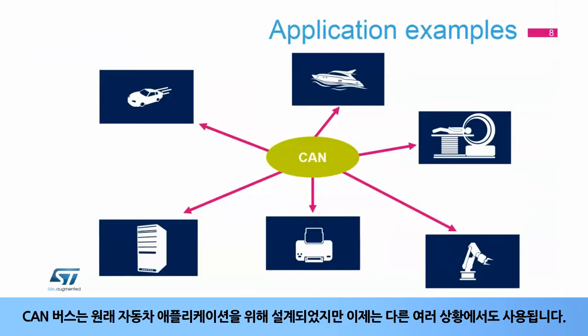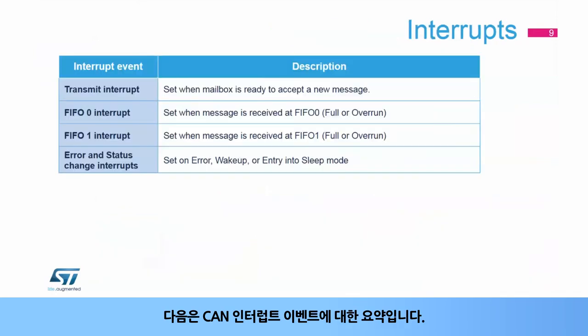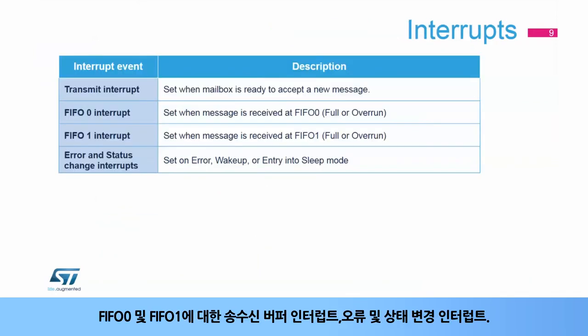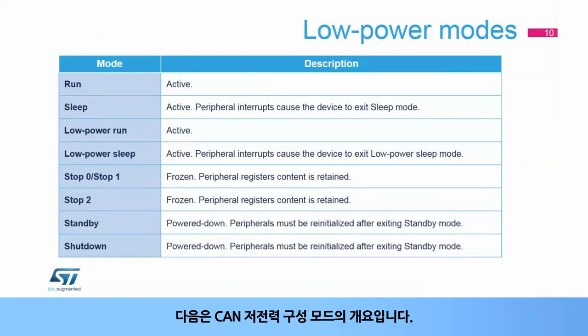The Controller Area Network CAN bus was originally designed for automotive applications, but is now also used in many other contexts. Here is a summary of CAN interrupt events: transmit, receive buffers for FIFO 0 and FIFO 1, and error and status change interrupts. Here is an overview of the CAN low-power configuration modes.